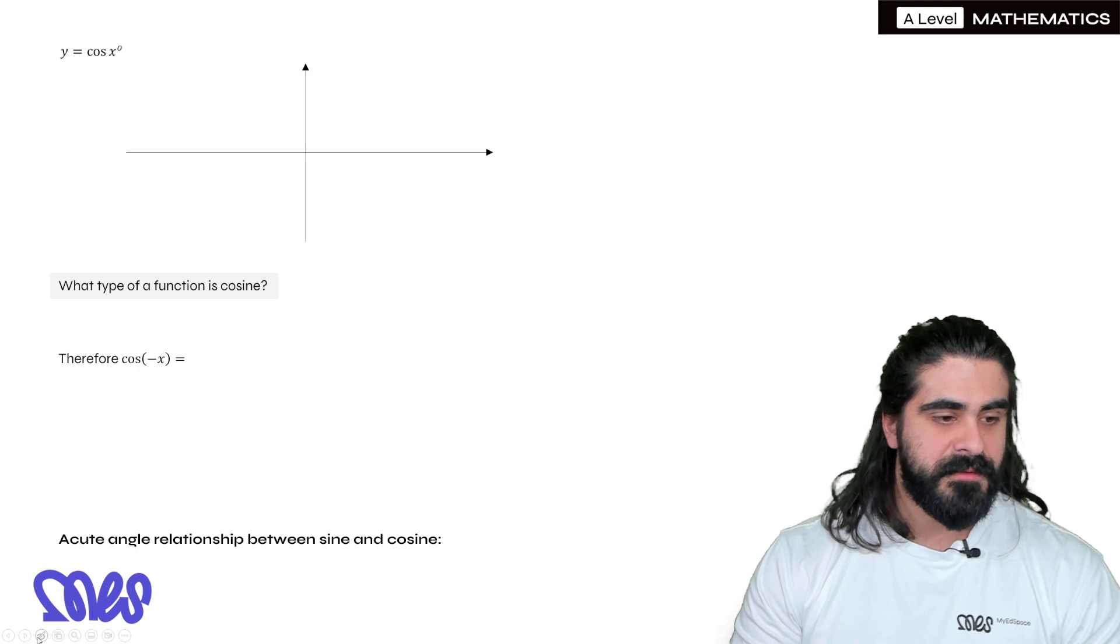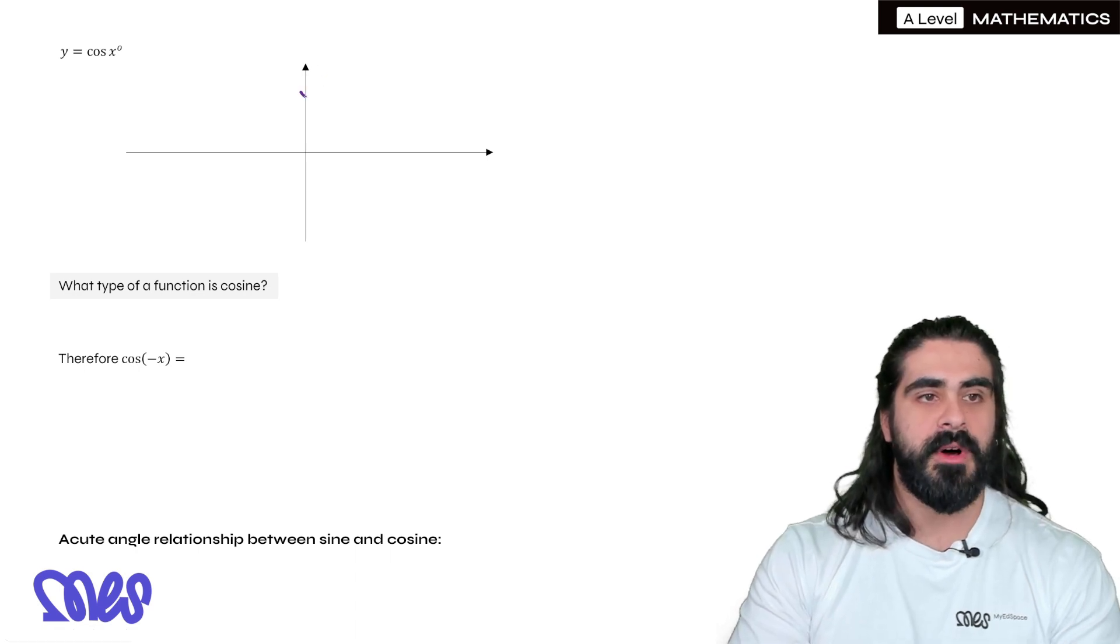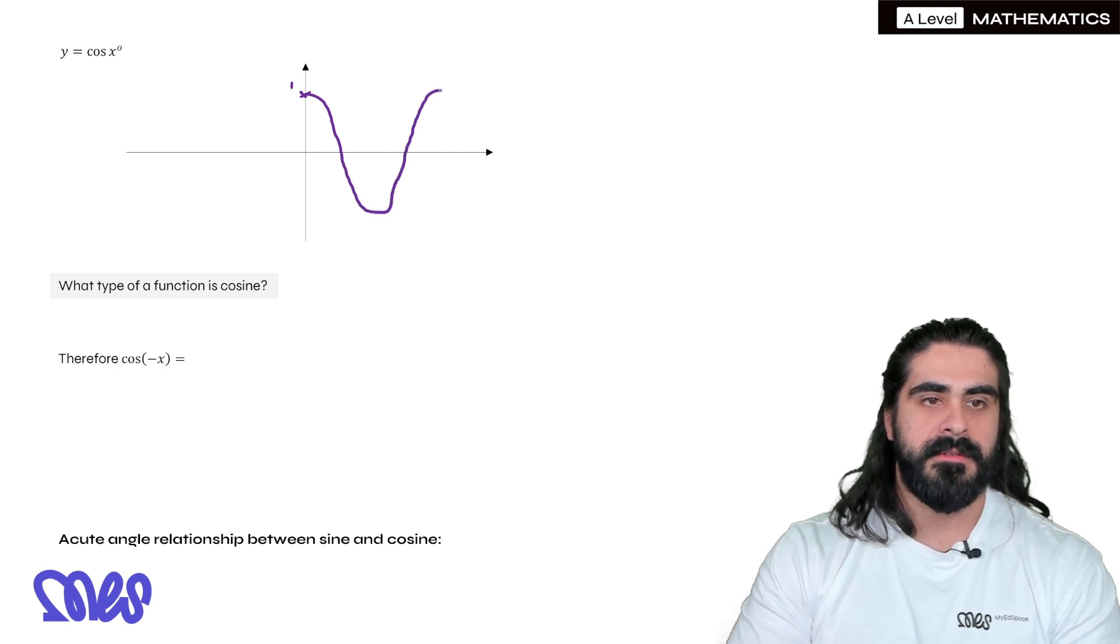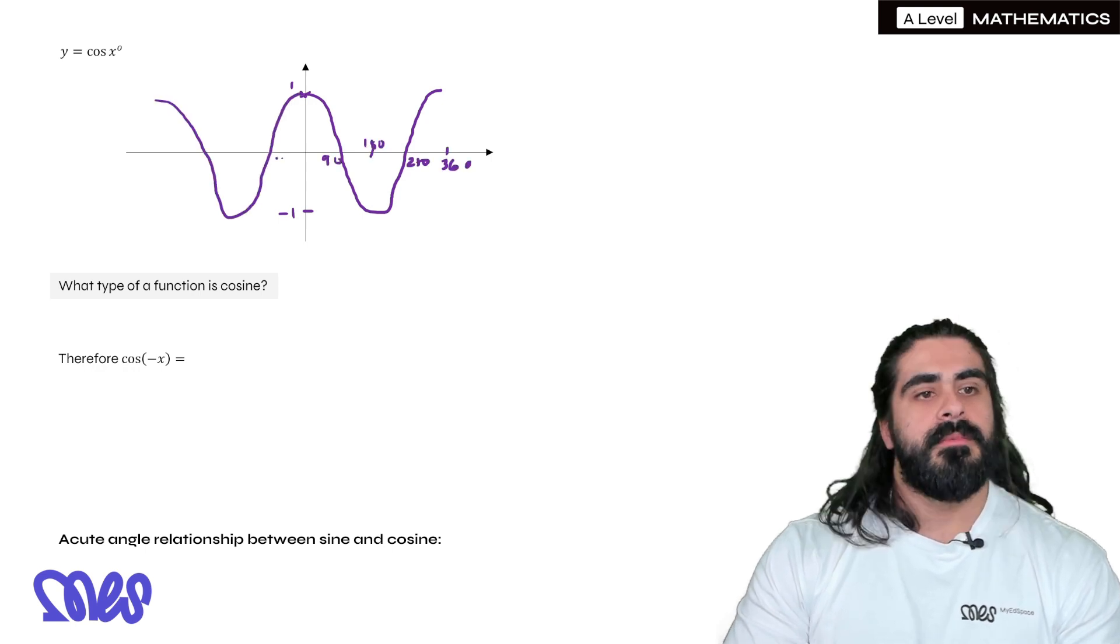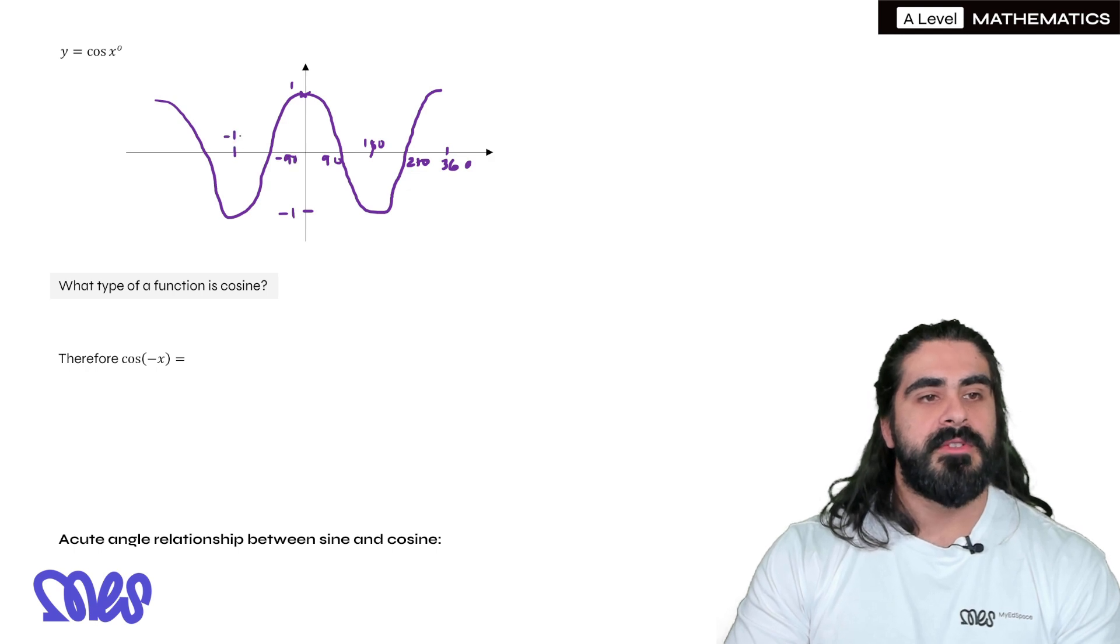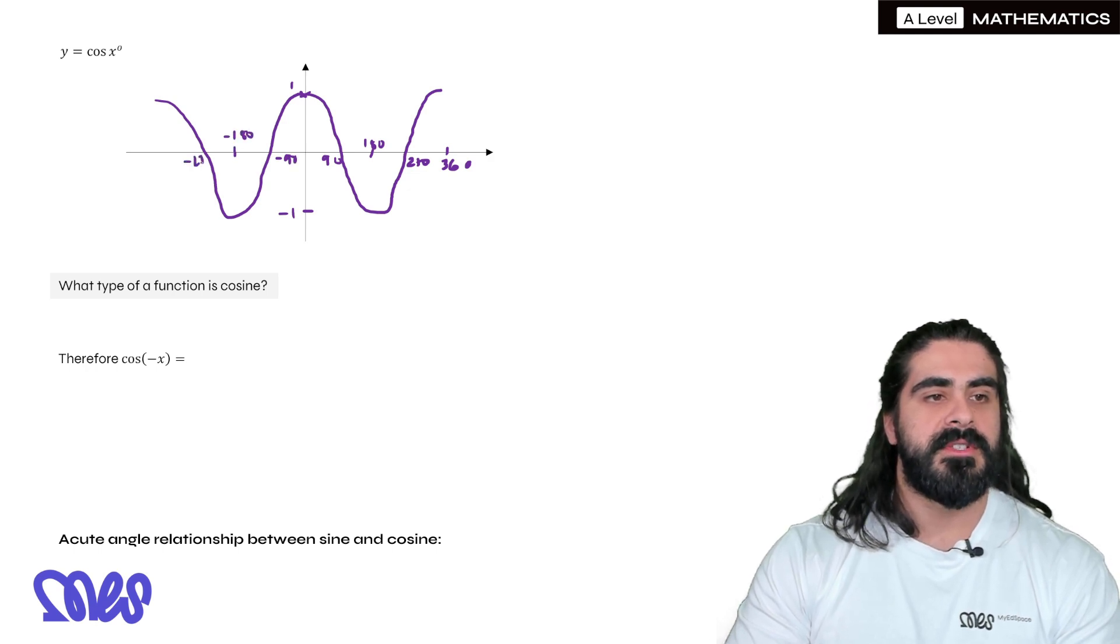How about for the cosine graph? Well, the cosine graph starts at 1 rather than 0, and it comes down, and then back up. It goes down to minus 1. Remember, something happens every 90. If we continue that, we have minus 90, minus 180, minus 270, and here we have minus 360.